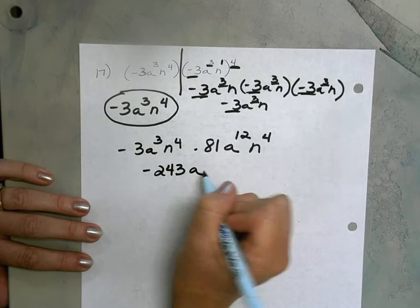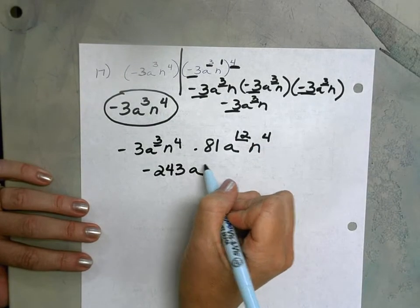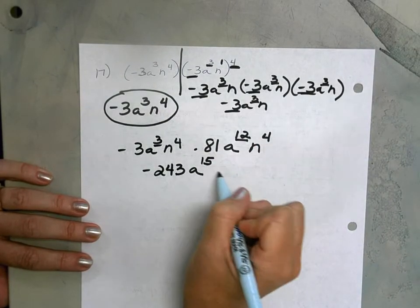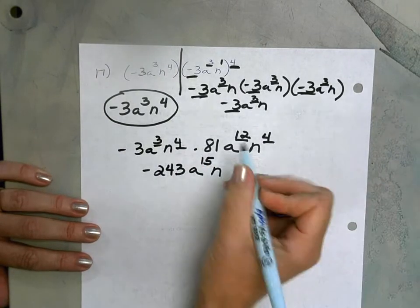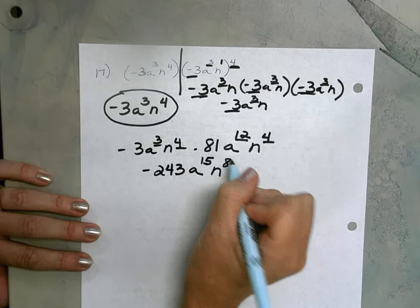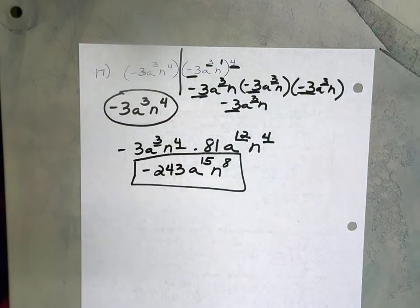I have a when I multiply with the same base. I can add the exponents. So a to the 15th. And then n when I multiply with the same base, I can add the exponents. And I get n to the 8th. And that is my simplified answer for number 17.